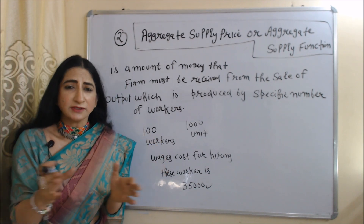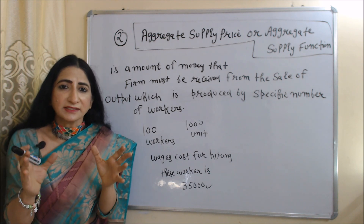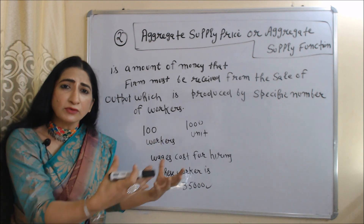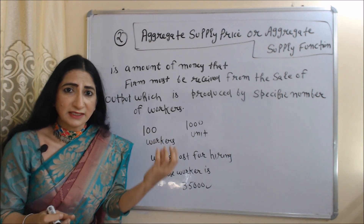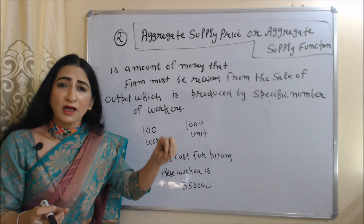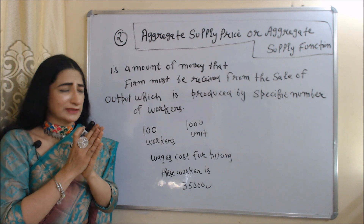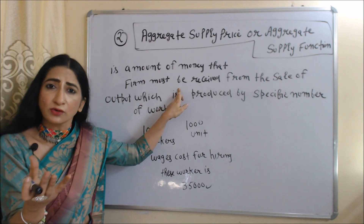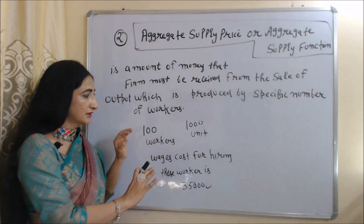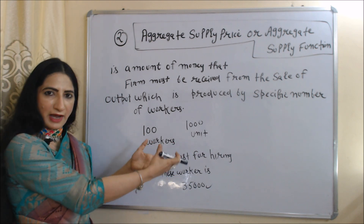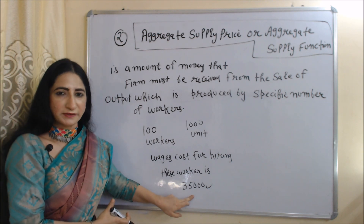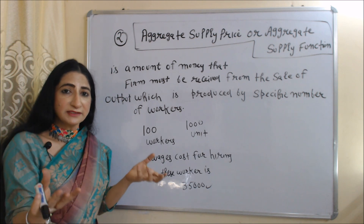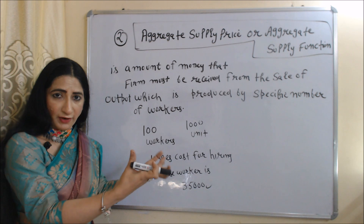Aggregate supply price is the total amount of money that a firm must receive from the sale of output produced by a specific number of workers. The firm must receive this amount because if it does not, it will not be able to recover its costs. For example, if there are 100 workers producing 1,000 units and the wages cost is 35,000 rupees, the firm must receive 35,000 rupees. That 35,000 rupees is called the aggregate supply price.